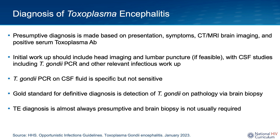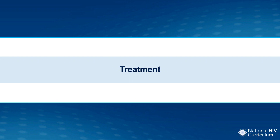The gold standard for the diagnosis of toxoencephalitis is the detection of the toxoplasma gondii parasite on tissue obtained from a brain biopsy. However, this is a very invasive procedure and is not usually required, since the diagnosis is almost always made presumptively based on clinical symptoms, imaging, and a positive serum toxo antibody. Now let's delve into treatment of toxoencephalitis.